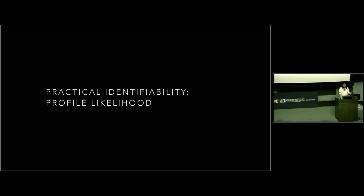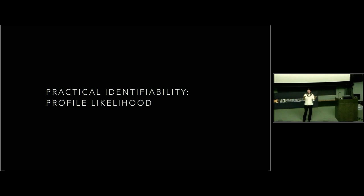One more method: profile likelihoods, which many of you have probably used for confidence bounds. Structural identifiability is important but doesn't capture everything. If you're thinking of your negative log-likelihood or cost function surface, you could have a minimum that flattens out into something not practically distinguishable from the true minimum. Structural identifiability would tell you that you're fine and have a unique estimate, but it doesn't tell you that other estimates nearby might be statistically indistinguishable from the true answer.